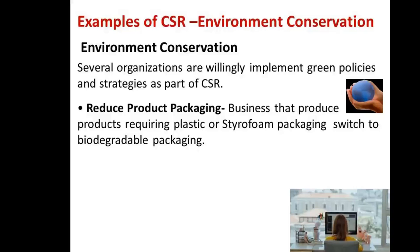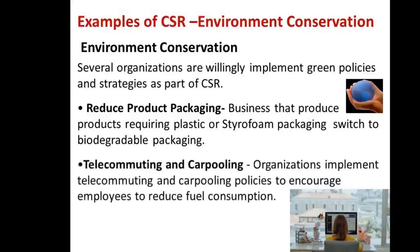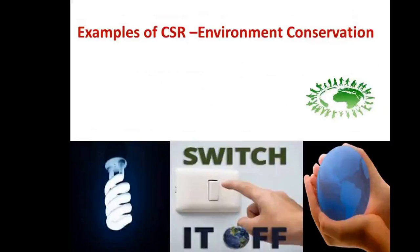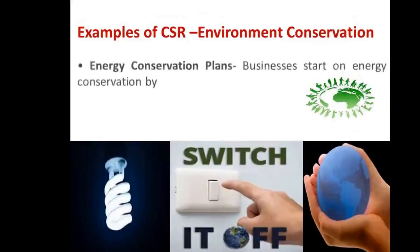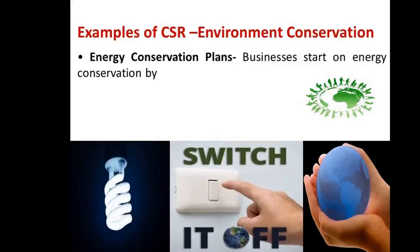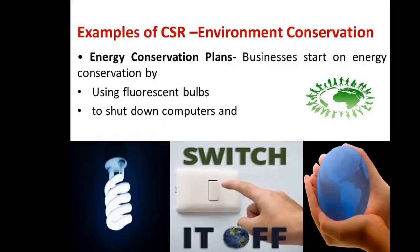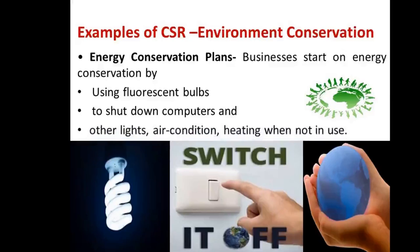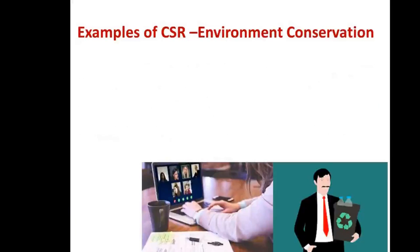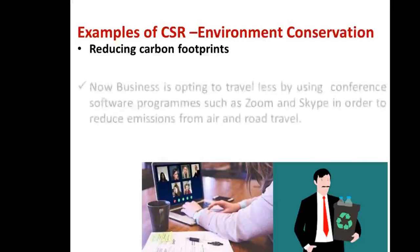The next type is environmental conservation. Environmental conservation is about saving our only home called Earth. Companies are doing this and enhancing their image among the public or community. Green initiatives like telecommuting, reduced packaging, using fluorescent bulbs, and switching off computers and air conditioning when not in use will not only reduce energy and the cost of production and operation, but will also enhance the image of the company among the public.